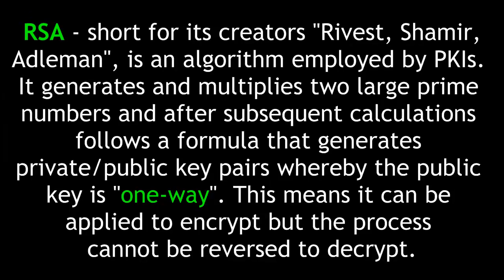RSA, short for its creators Rivest, Shamir, and Adleman, is an algorithm employed by PKIs. It generates and multiplies two large prime numbers, and after subsequent calculations follows a formula that generates private-public key pairs, whereby the public key is one way. This means it can be applied to encrypt, but the process cannot be reversed to decrypt.